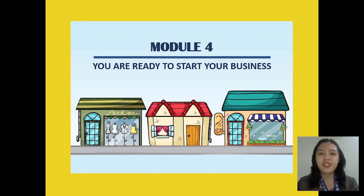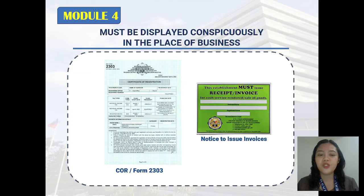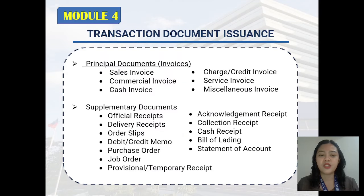Let us now proceed to Module 4, which provides guidelines on how to start your business. These documents must be displayed conspicuously in the place of business: the Certificate of Registration or Form 2303, and the Notice to Issue Invoices.